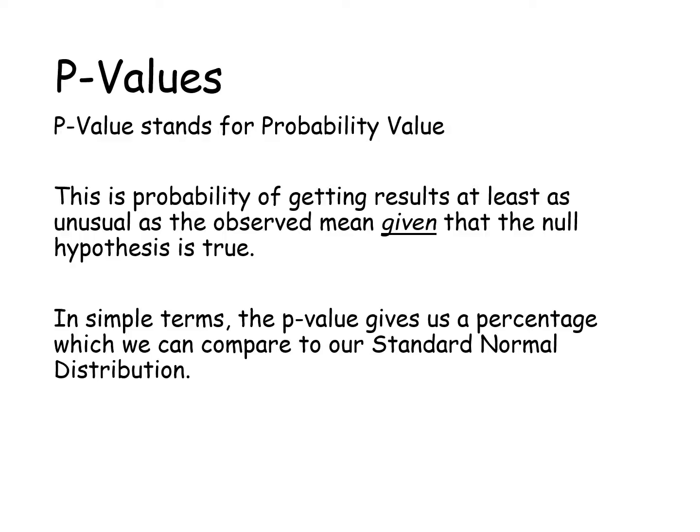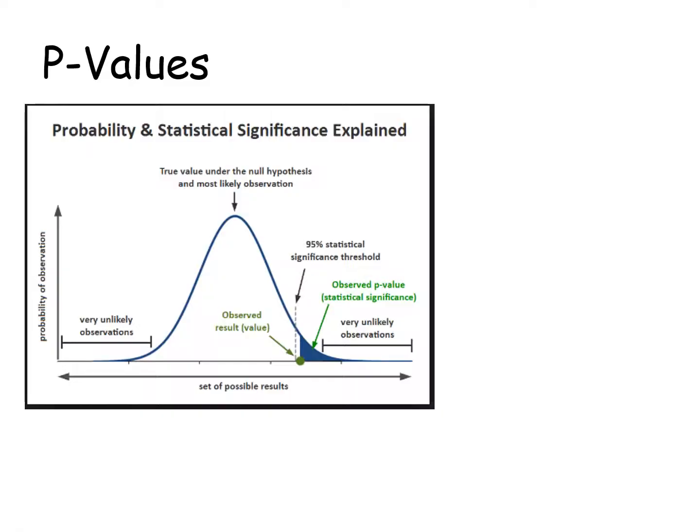Let's look at our standard normal. Here we have a set of possible results, with very unlikely observations on the left and right, and the true value of the null hypothesis with most likely observations in the middle. There's a 95% statistical significance threshold.